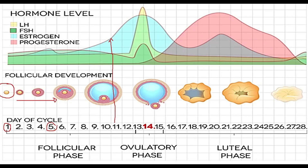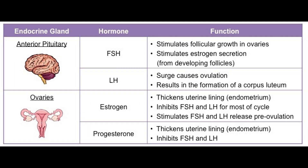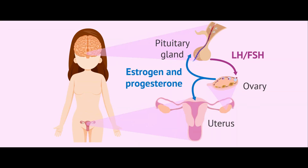Now let's look at the hormonal control involved in the cycle. Hormones regulate the menstrual cycle. FSH stimulates follicle growth. LH triggers ovulation. Estrogen rebuilds the uterine lining. Progesterone maintains the lining for implantation.